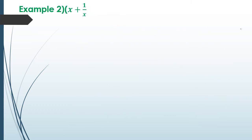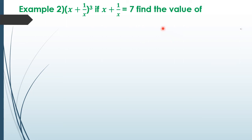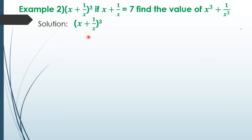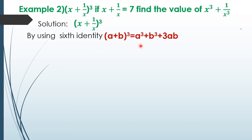Example 2: If x + 1/x = 7, find the value of x³ + 1/x³. Using the sixth identity (a + b)³ = a³ + b³ + 3ab(a + b), here a = x and b = 1/x.